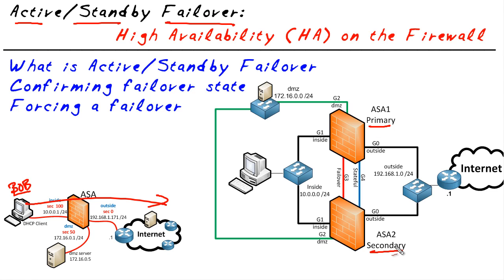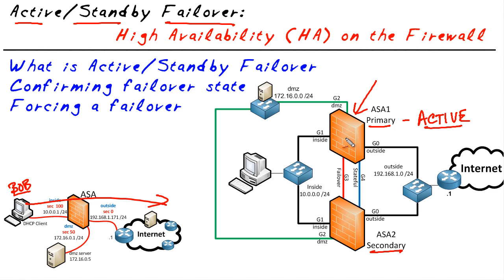On a good day when they both boot up, they chat with each other and the primary one takes the role of being active. In Active Standby Failover, 'active' simply means this is the ASA that's doing the forwarding. When Bob goes out to CBTNuggets.com, it's this firewall that's forwarding the packet and maintaining the session state table so reply traffic can come back.